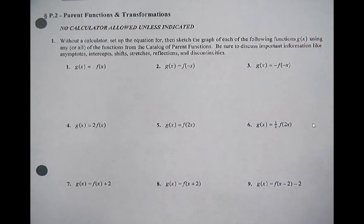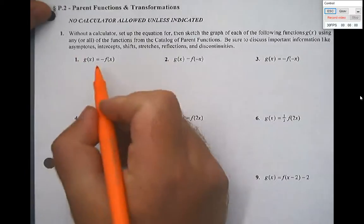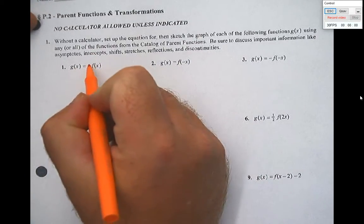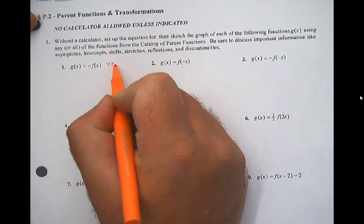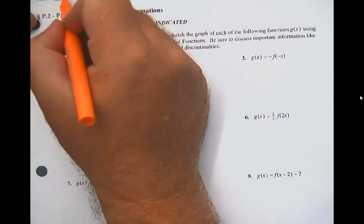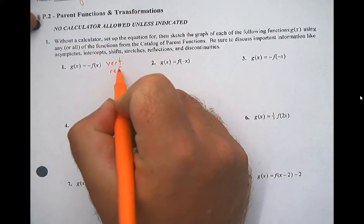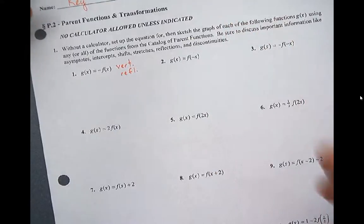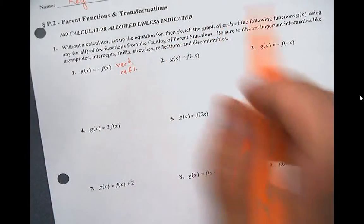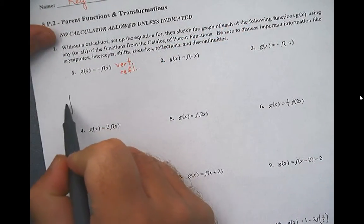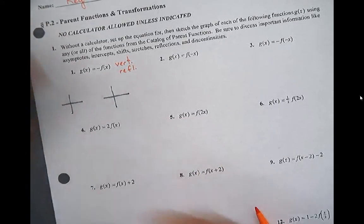What I'm looking for here is for you to look at these transformations and then come up with a parent function to work with and discuss what's going to happen to that function. So for instance, if I was to do the first one — g of x equals negative f of x — f of x is my parent function, and then we're applying a transformation to get our new function, g of x. All we're doing is multiplying our function by a negative.